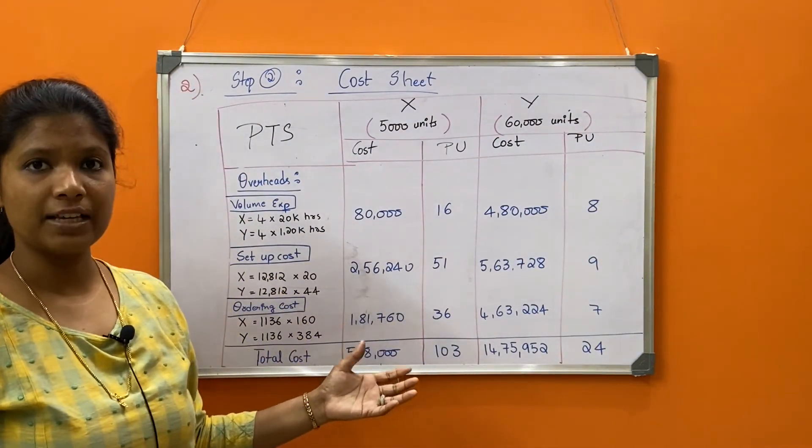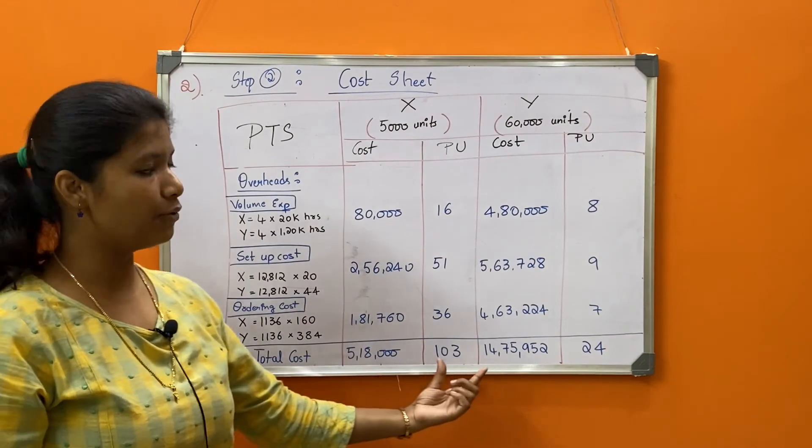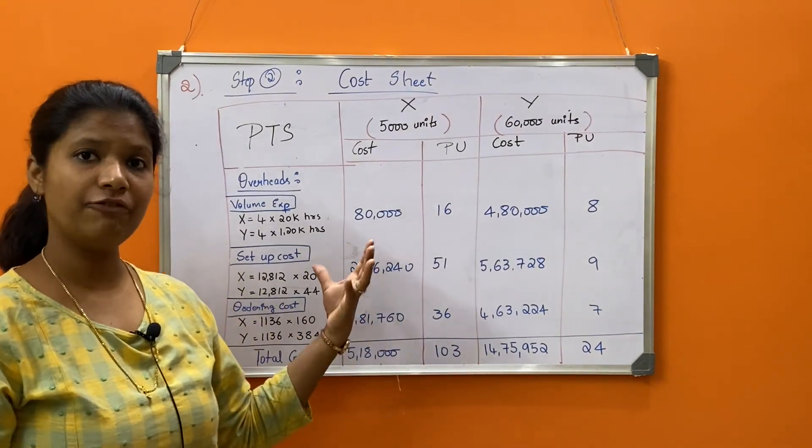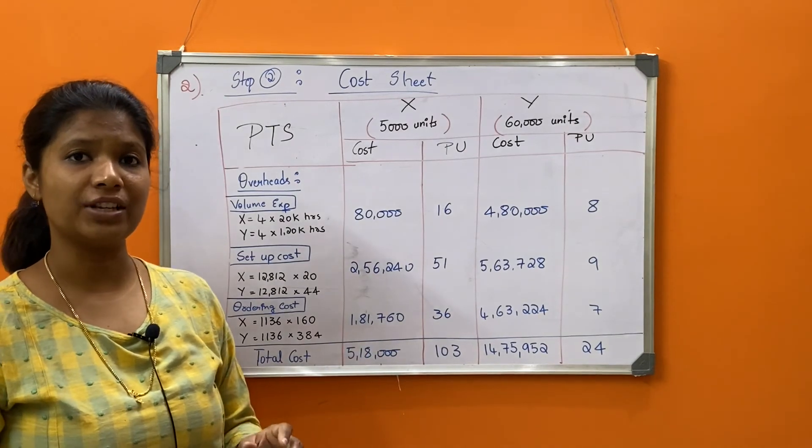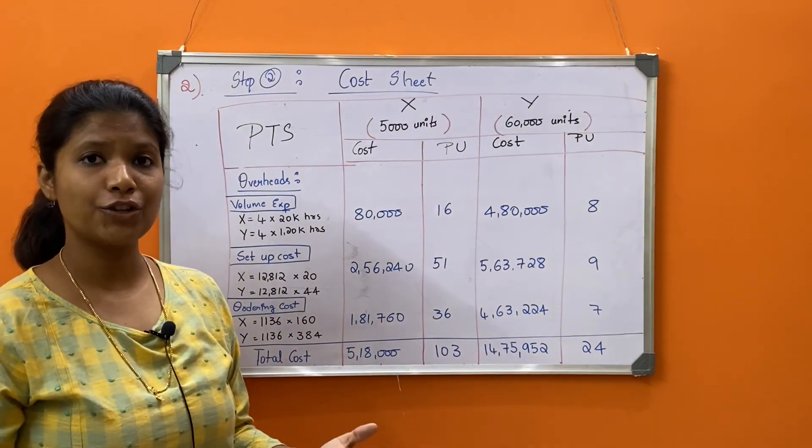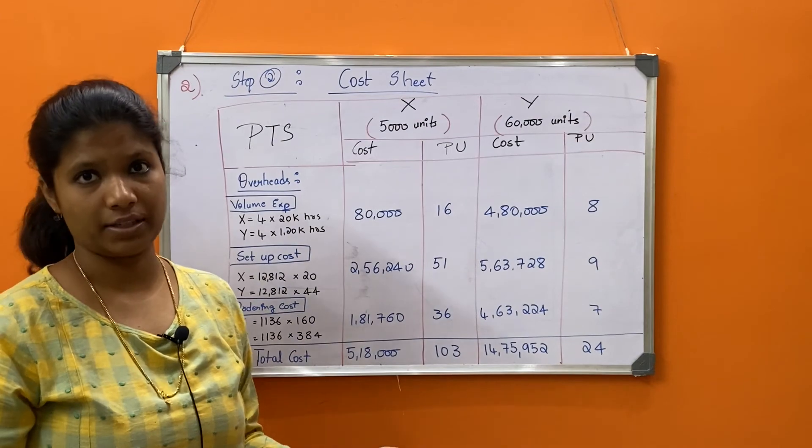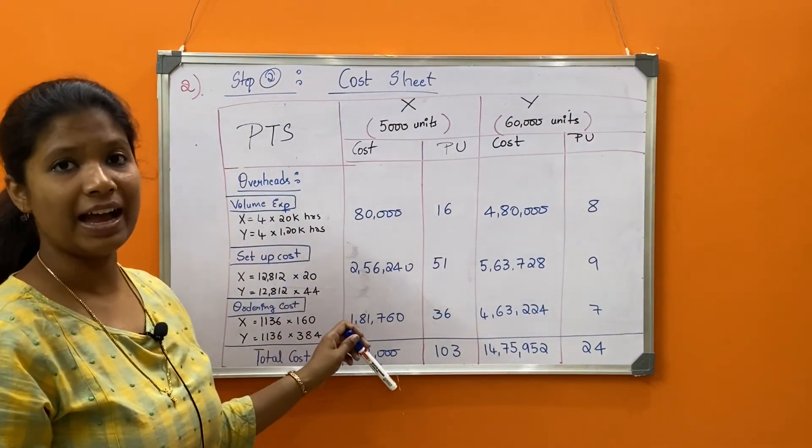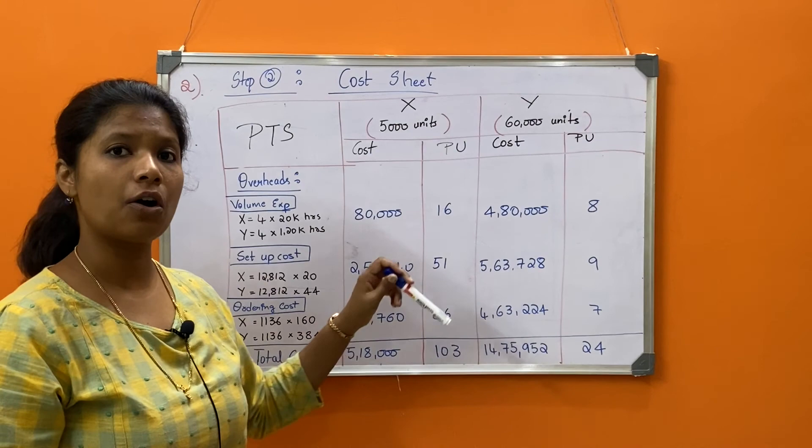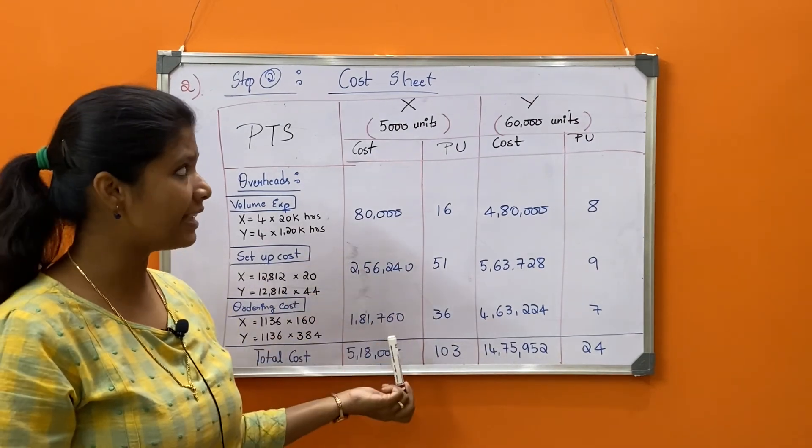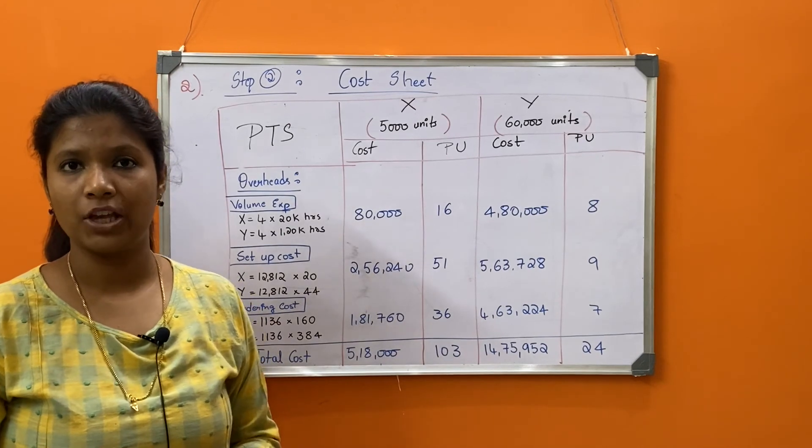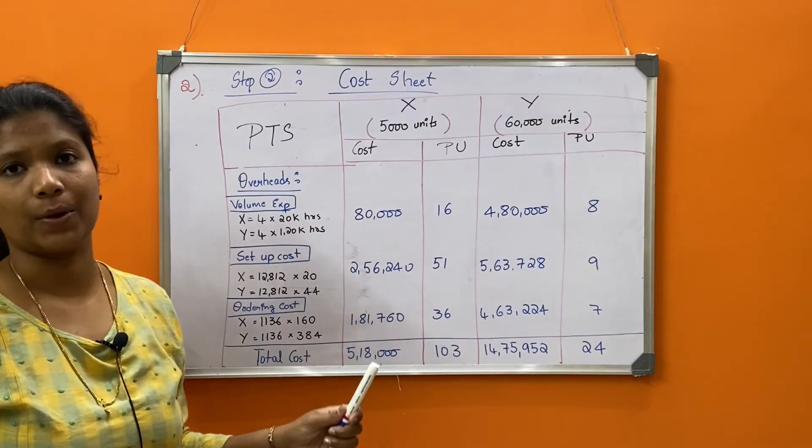Now we can observe these values compared with the first method, traditional method. We can observe that traditional method just based on production allotted cost. But here, when we actually look into it, we have accurate cost allotted to each product - product X and product Y. This completes our second question.